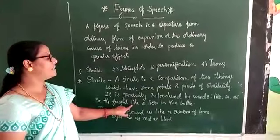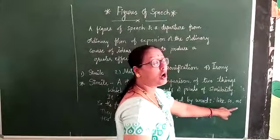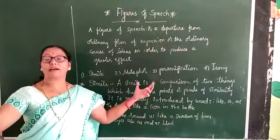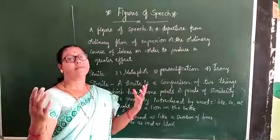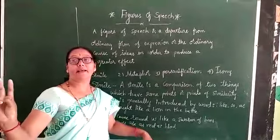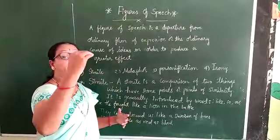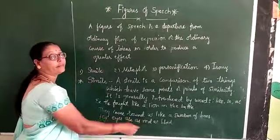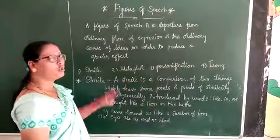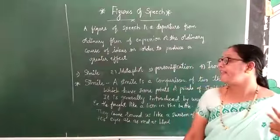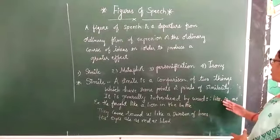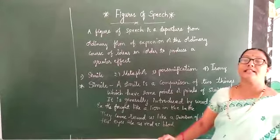We can find simile by looking for the words 'like', 'so', or 'as'. For example: 'They came around us like a swarm of bees' — bees gathering quickly. Another example: 'His eyes are as red as blood.' Two things are compared here — his eyes compared with red blood. These lines use 'as', so the figure of speech is simile.